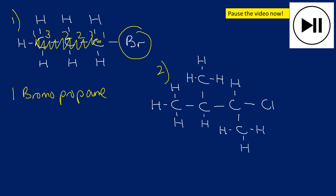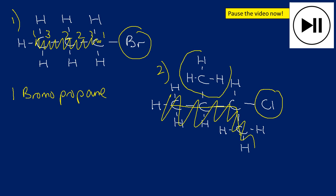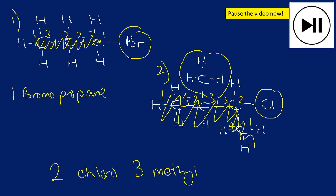The second practice question: it's a haloalkane with a chloro group. The longest carbon chain is four carbons — butane. There's a methyl and a chloro group. Numbering 1-2-3-4 gives the answer 2-chloro-3-methylbutane. If you called it 3-chloro-2-methylbutane, or didn't use alphabetical order, your BTEC mark scheme would still accept it — the key is whether you're following the rules correctly.